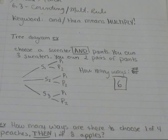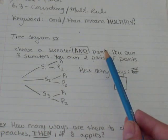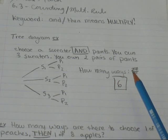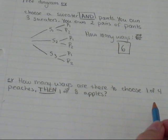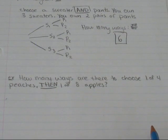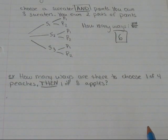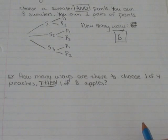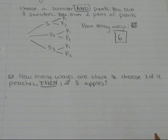So there's a different way to do this. If you have like eighteen pairs of pants and 600 sweaters, you don't want to be making a tree diagram. So in this next example, I'm going to show you a few options for doing a question where you don't want to draw a tree diagram. So my question says, how many ways are there to choose one of four peaches then, magic word, one of eight apples?